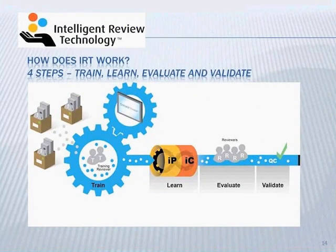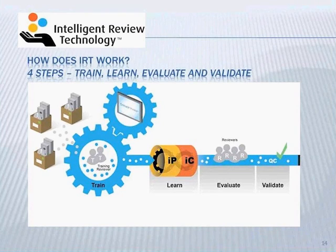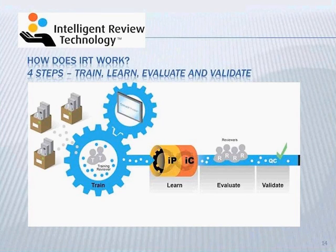One of the hottest topics in the market right now is predictive coding, or TAR. Kroll on Track's technology is called Intelligent Review Technology. We're going to cover the basic principles of TAR, but primarily focus on the three components of the Intelligent Review Technology that Kroll's platform provides: workflow, intelligent prioritization, and intelligent categorization.